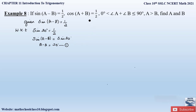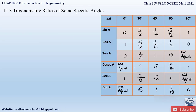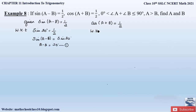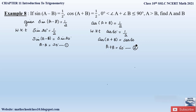Similarly, the second equation given is cos(A + B) is equal to 1/2. Let us find the value of cos at which it is 1/2. At cos 60 degrees we have 1/2 from the table. So comparing the two equations, cos(A + B) equals cos 60 degrees, because 1/2 is nothing but cos 60. Therefore A + B equals 60 degrees. Let us take this as equation number 2.